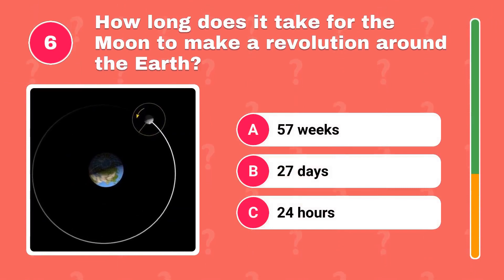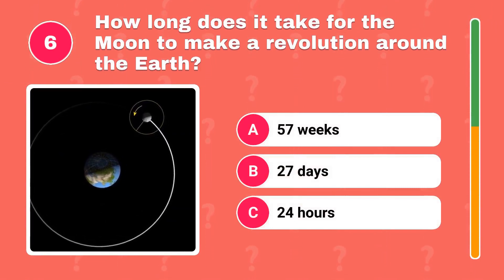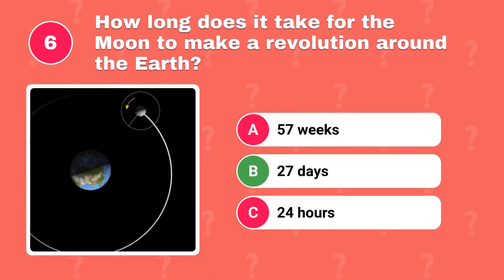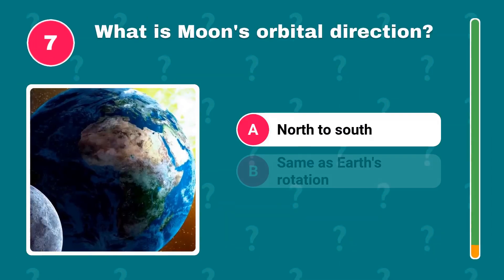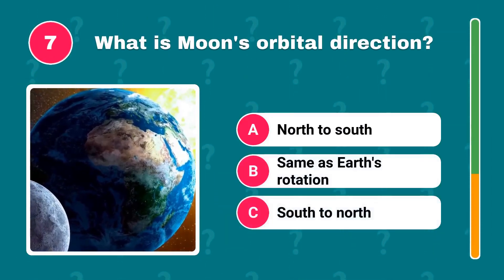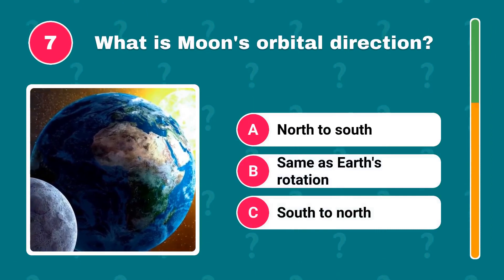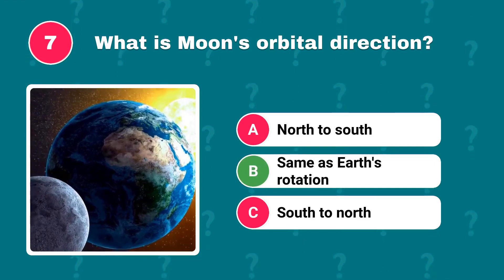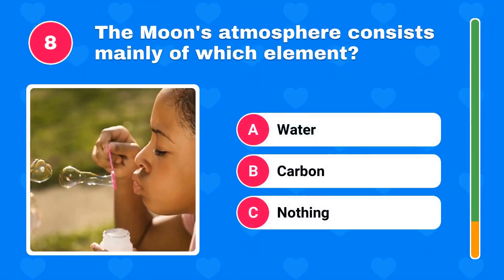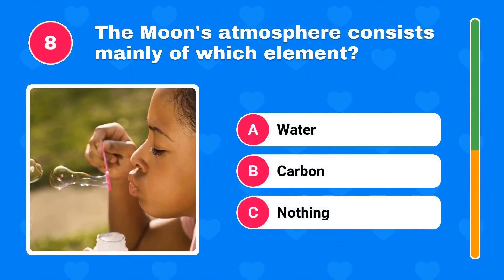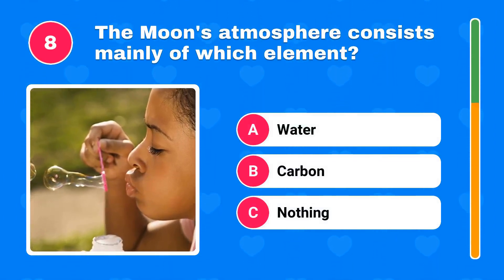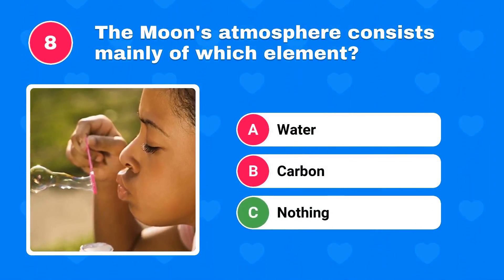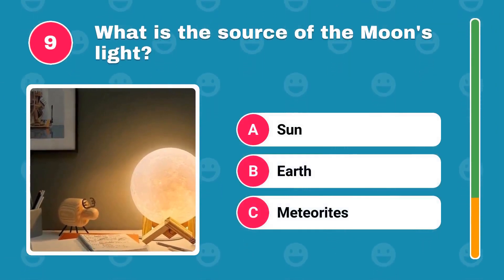How long does it take for the Moon to make a revolution around the Earth? What is the Moon's orbital direction? The moon's atmosphere consists mainly of which element? What is the source of the moon's light?